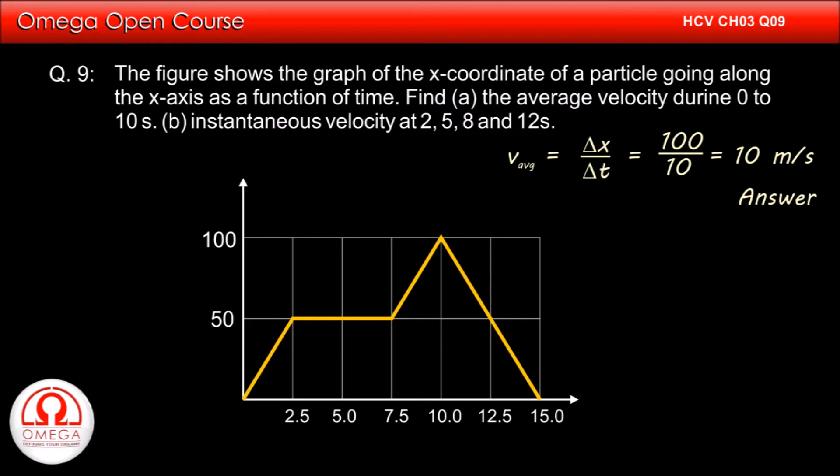The instantaneous velocity is given by the slope of the velocity-time graph. As can be seen in the graph, the slope of the graph is constant during t equals 0 to t equals 2.5 seconds. Therefore, the slope at t equals 2 seconds is equal to the slope in the interval t equals 0 to t equals 2.5.